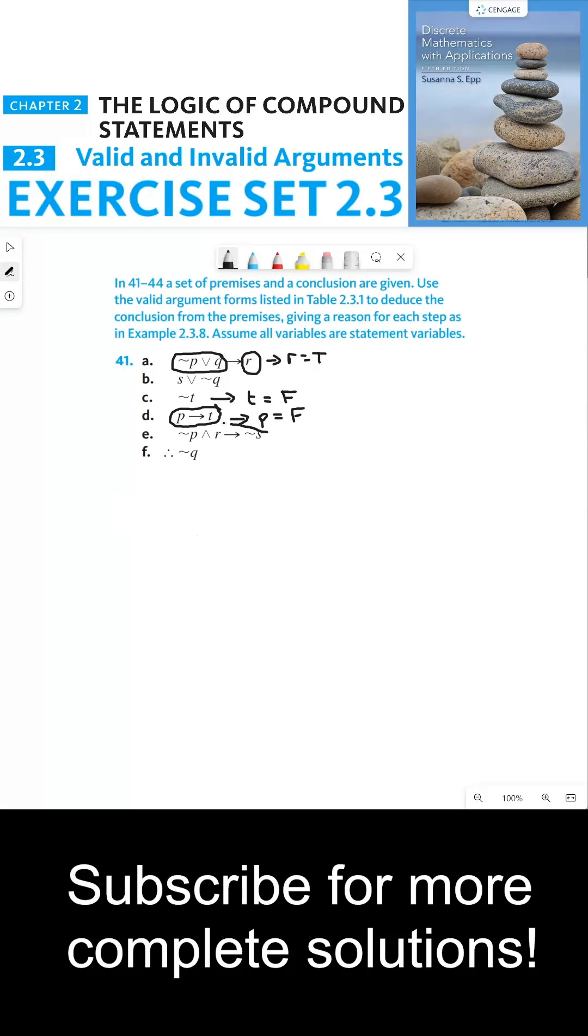Now we can look at our last implication here. We have not p and r. Not p is true since p is false, and r is true. So that means the hypothesis of this implication is true, which means the conclusion must therefore also be true since the entire implication itself is one of our assumptions. So this means that not s is true. And the truth of each of these statements here, r and not s, is determined by modus ponens.